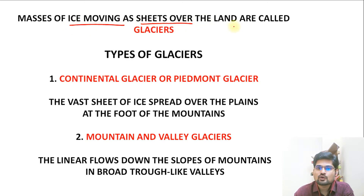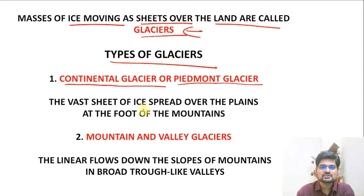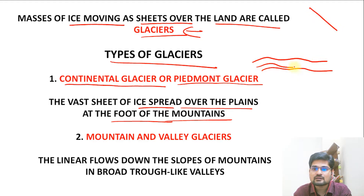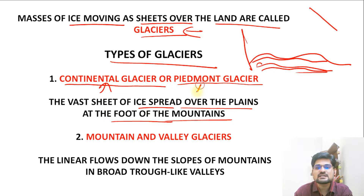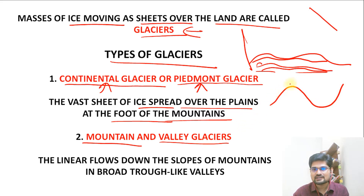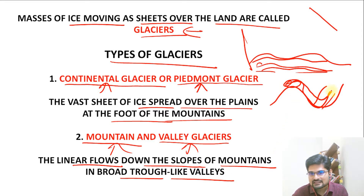Masses of ice moving as sheets over the land are called glaciers. There are two major types. First, the continental glacier or Piedmont glacier — a vast sheet of ice spread over plains at the foothills of mountains, found in Antarctic, Arctic, Greenland, and Himalayan regions. Second, the mountain and valley glacier, which flows linearly down slopes of mountains in broad, trough-like valleys called glaciated valleys.